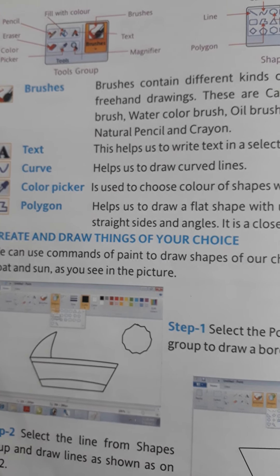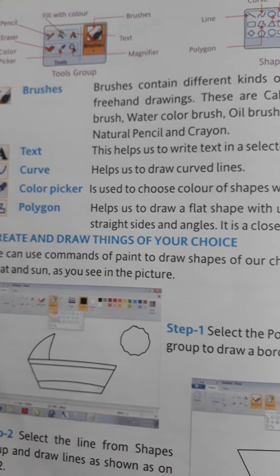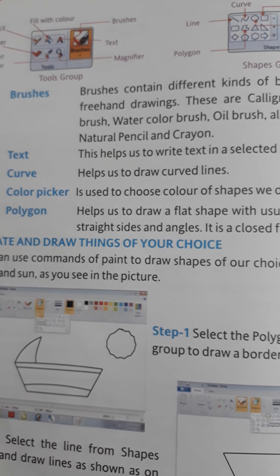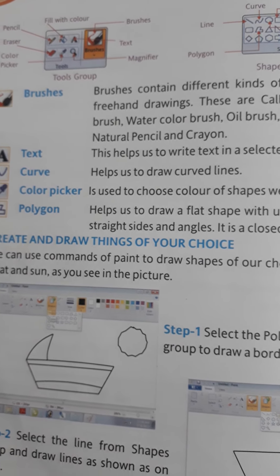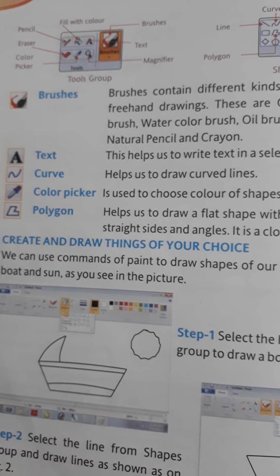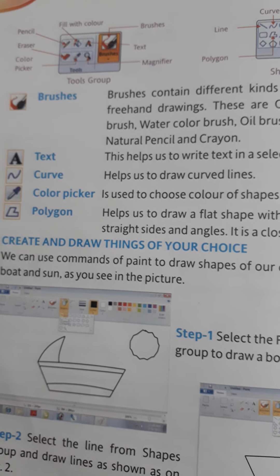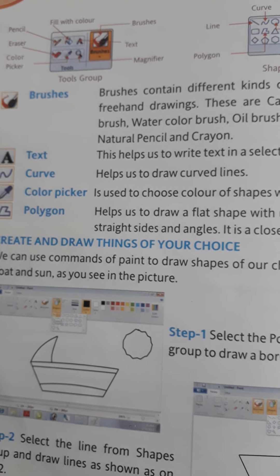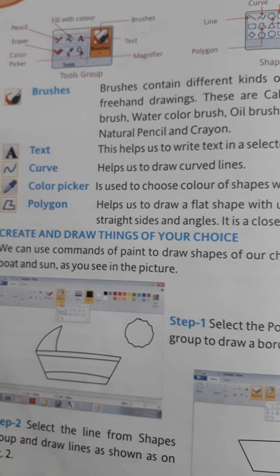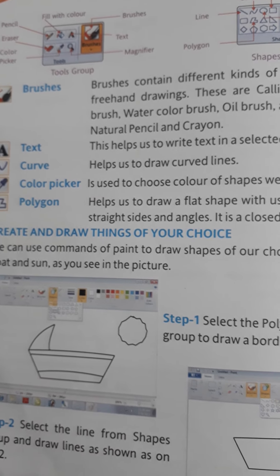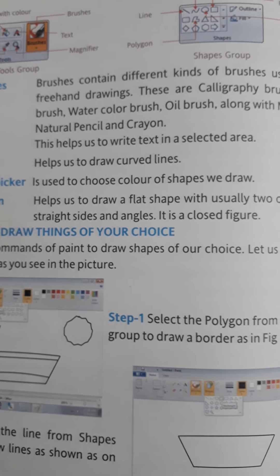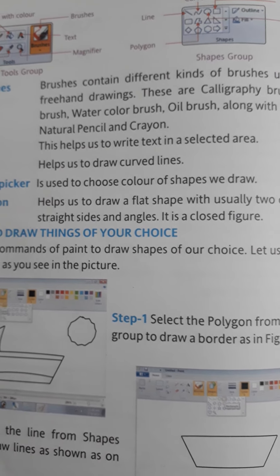The next tool is the Curve tool. The Curve tool helps us to draw curved lines — it is used to make a curvy line like waves. Next is the Color Picker, which is used to choose the color of shapes we draw.